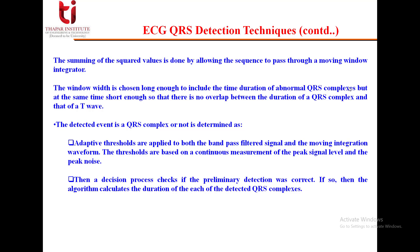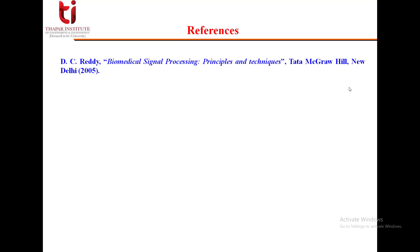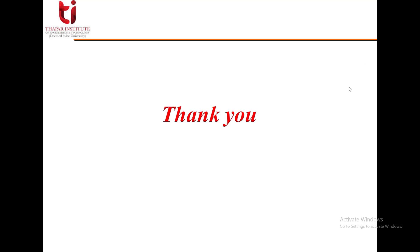The thresholds are based on a continuous measurement of the peak signal level and the peak noise. A decision is then made by checking if the preliminary detection was correct. If so, the algorithm calculates the duration of each of the detected QRS complexes. That was all for this lecture. Most of the topics are taken from the book Biomedical Signal Processing: Principles and Techniques by D.C. Reddy, published by Tata McGraw-Hill. Thank you.